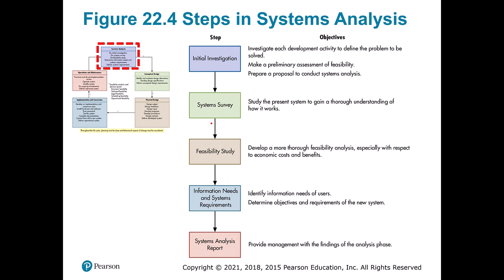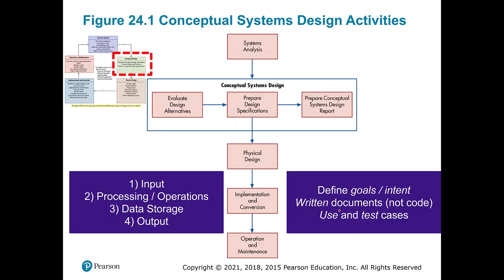Each of these phases can be broken out in more detail. In the analysis phase, we're doing feasibility and interest, studying the present system, cost and benefit analysis, and defining objectives and requirements. In the conceptual design, we have three stages: evaluate design alternatives, prepare the specifications, and make our conceptual system design report. Two things that help with this process are thinking through the four general steps: input, processing, storage, and output.